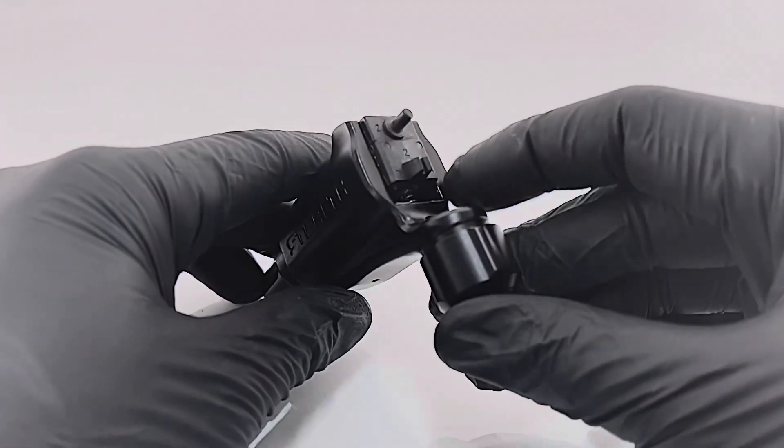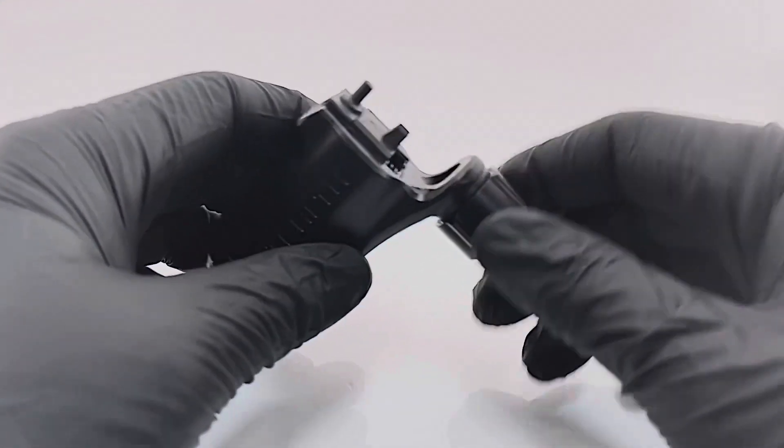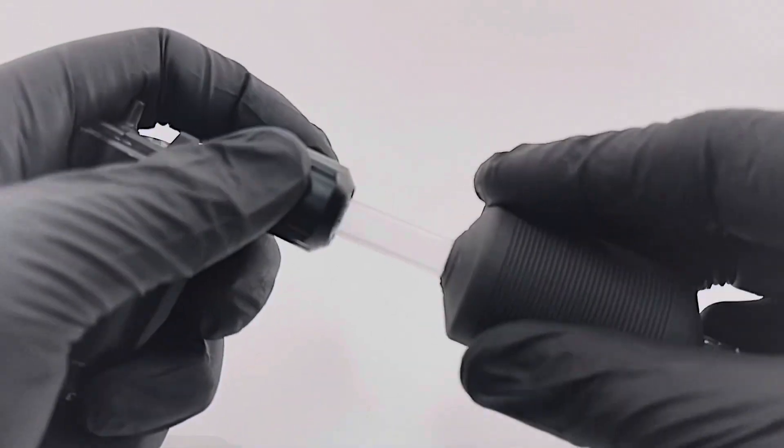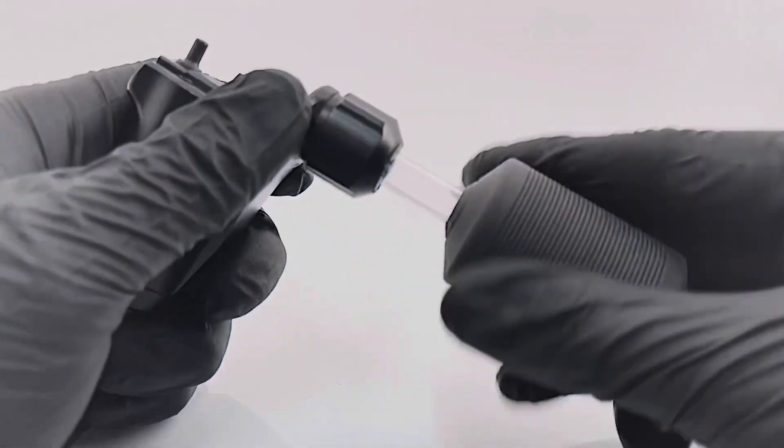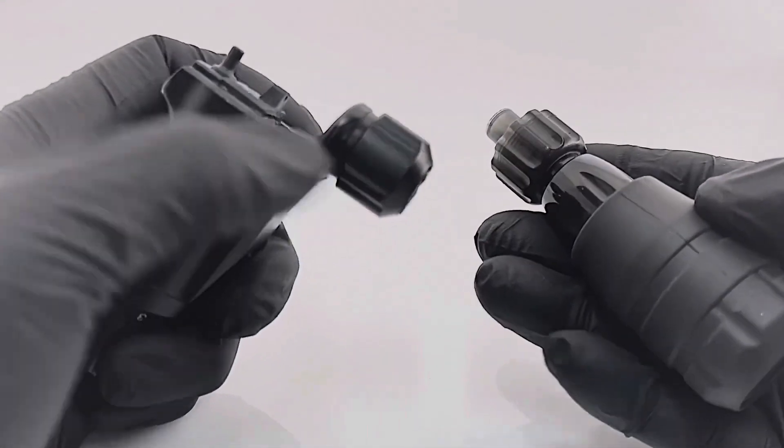This machine works with your standard loop bar, or if you want to use cartridges, you would just need a plunger as well as a cartridge grip. So once again, you can use your standard grip or disposable for it, or if you have a cartridge grip, your standard cartridge grip, it'll work with the machine as well.